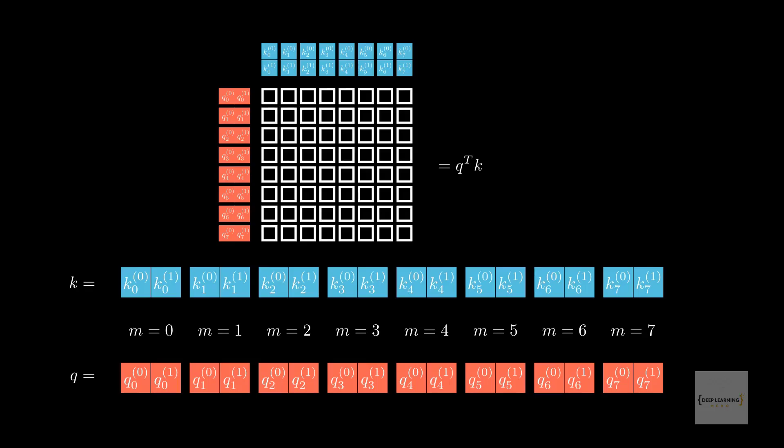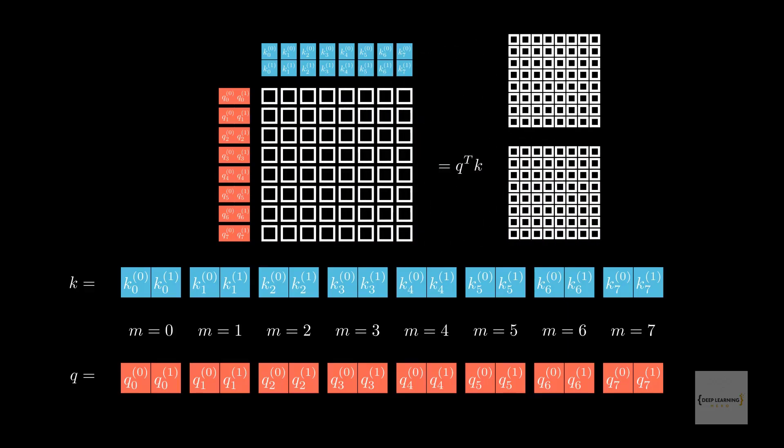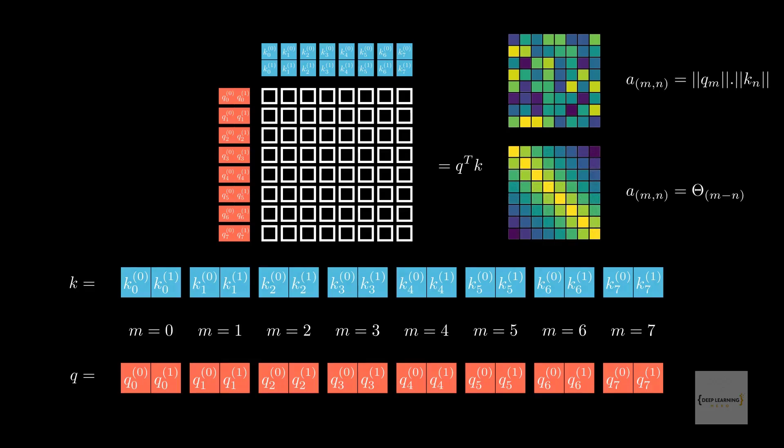Each position has a query and a key. In our case, let's assume a dimensionality of two. So each query or key is a 2D vector. When computing the attention metrics, we want it to encode two characteristics. Tokens that have similar token embeddings should have a higher score, which is a no-brainer.